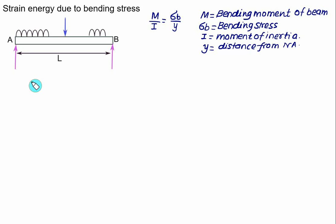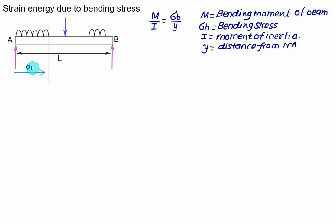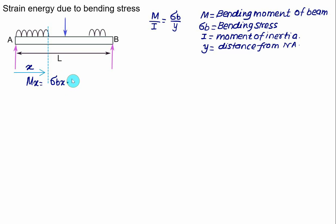Depending upon the reactions at the two supports, the bending moment will continuously vary. We consider a section at a distance X from the left support A. At that distance X, the bending moment M_X can be calculated as σ_B multiplied by I divided by Y. So bending moment equals the corresponding bending stress σ_BX at location X, multiplied by moment of inertia I divided by the distance from the neutral axis.